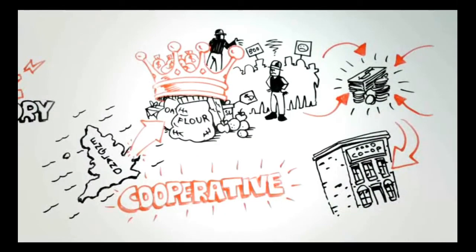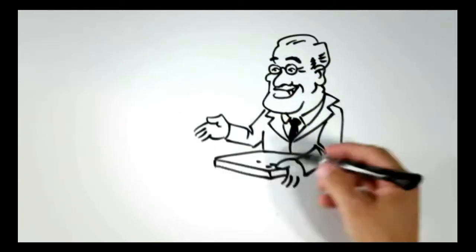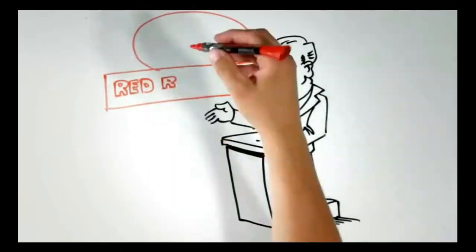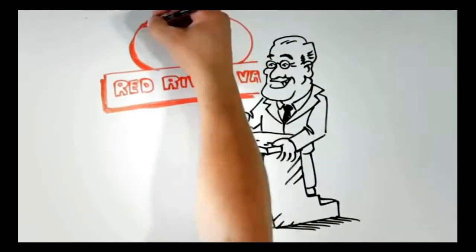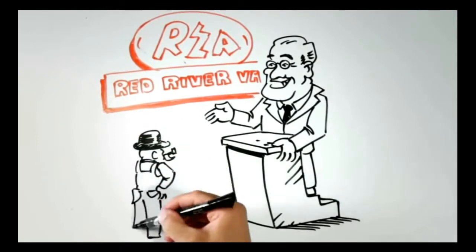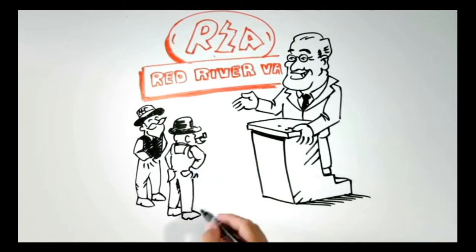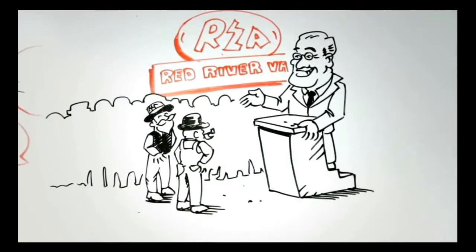The idea caught on. Here in the U.S., President Roosevelt gave electric cooperatives a jumpstart with the founding of the Rural Electrification Administration, the REA, telling American farmers and ranchers, if you want electricity, you can do it yourselves. And they did.